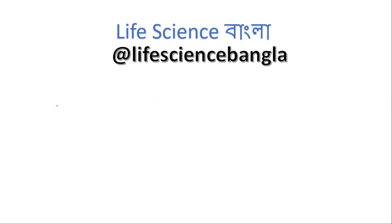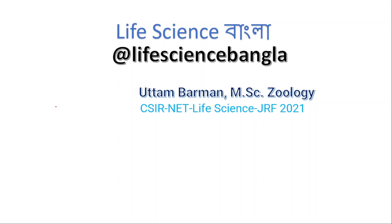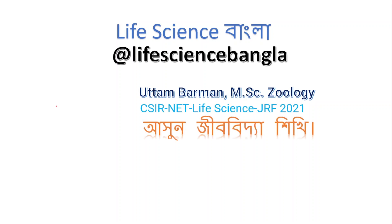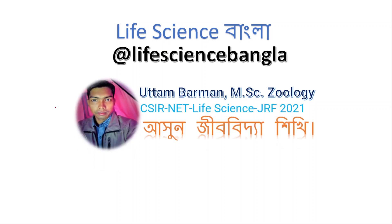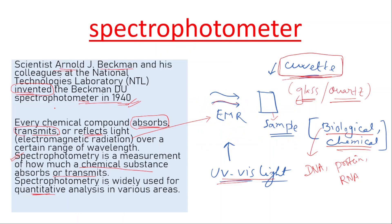Hello everyone, welcome to Life Science Bangla. I am Uttar Mormun. Today I am going to talk about the spectrophotometer. Arnold J. Bachman invented the spectrophotometer, which is used to analyze chemical compounds.